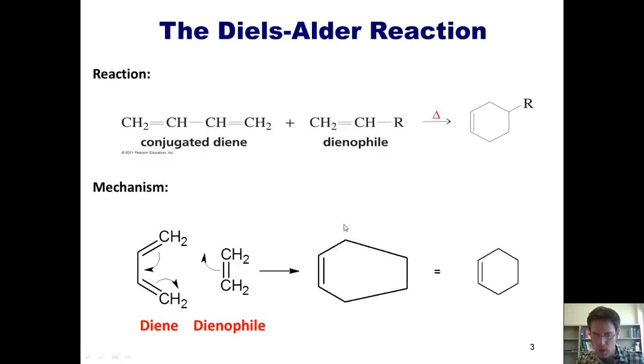As that occurs, it forms this product, which, when redrawn in a prettier manner, is this, cyclohexene.